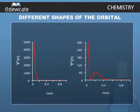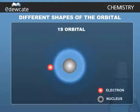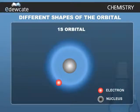The variation of psi squared as a function of r for 1s and 2s orbitals is shown here. Notice that the curves for 1s and 2s orbitals are different. It may be noted that for 1s orbital, the probability density is maximum at the nucleus and it decreases sharply as we move away from it.